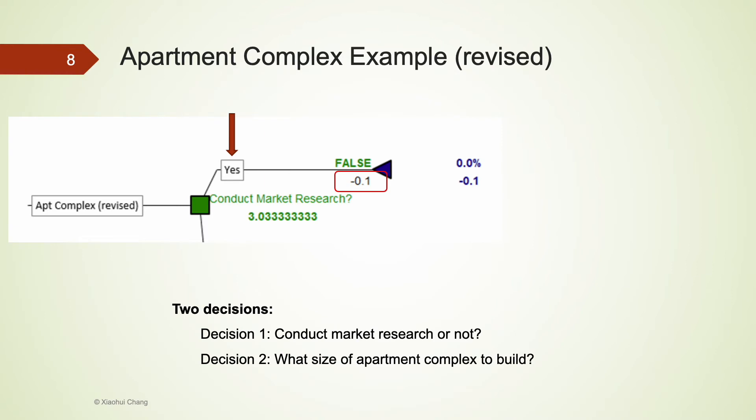This time, we consider the situation where the company decides to carry out the market research. So that's going to be the yes path. Well, this market research costs $100,000. We would have to modify the first decision node. We now take the yes path to reach a chance node, where the company waits for the outcome of this report.